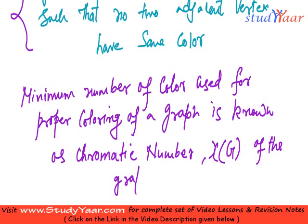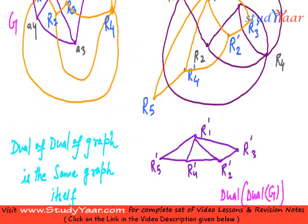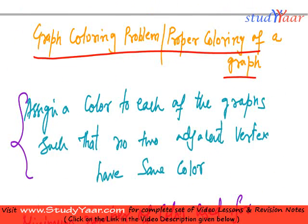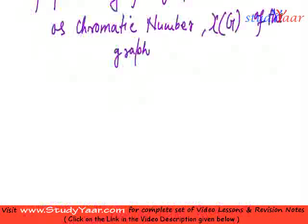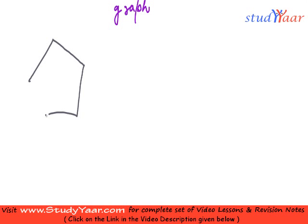So that is about your graph coloring or proper coloring of a graph. Let us suppose I have a graph like this. What I want is to color the vertices of this graph so that no two adjacent vertices should have the same color.